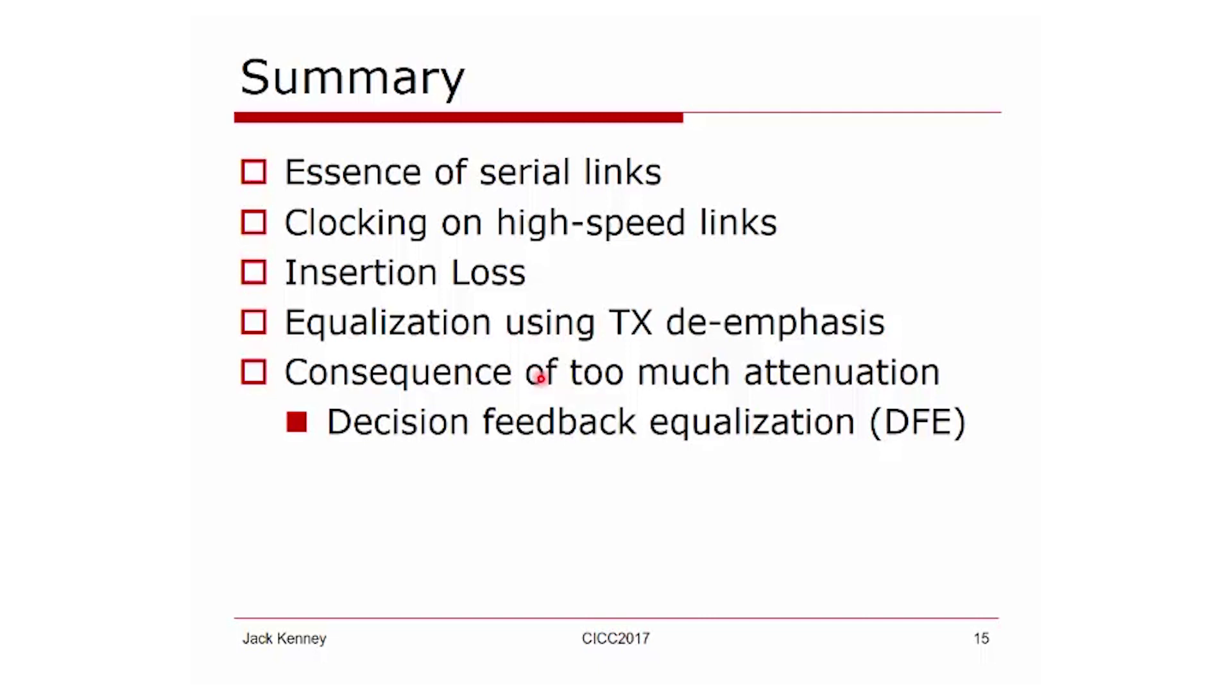The consequence we showed in the last slide at 25 gigabit per second is that at some point the linear equalizer will fail and we'll be heading towards architectures such as decision feedback equalization.